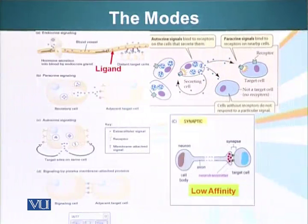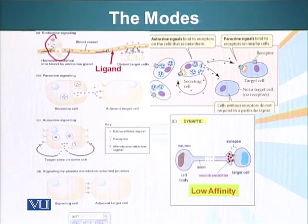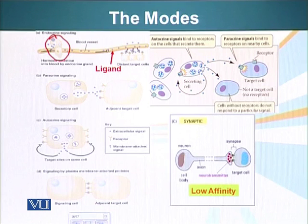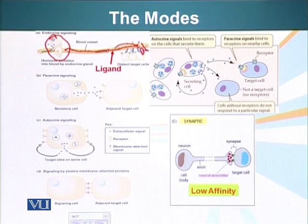So let's look at the modes. First of all, there's endocrine signaling, in which a particular cell or group of cells produce the signaling molecule or ligand. It is shipped to the bloodstream and transported from one part of the body to another, ultimately reaching different target cells which will read the signal and respond accordingly.